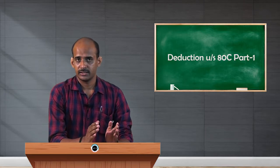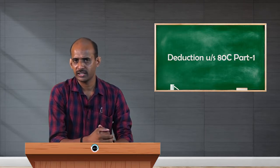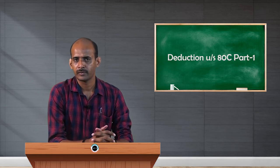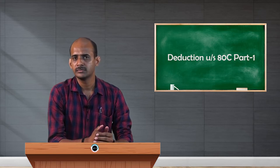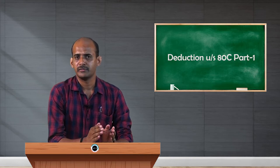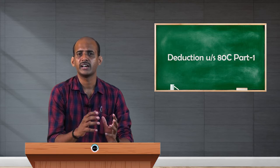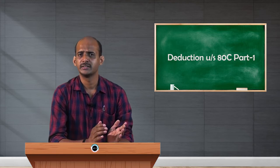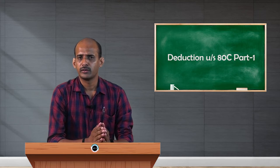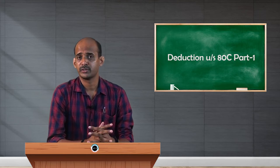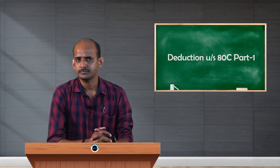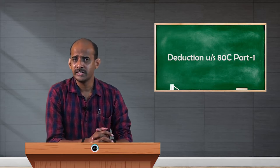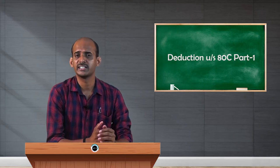When the income from all 5 sources is presented before the income tax department, the income looks very big. The income tax department makes it mandatory for all assesses to pay tax on that income. Generally, assesses may not be willing to pay tax on an amount appearing so large, because it is hard-earned money. They may try to avoid payment of taxes, even through illegal or unacceptable means.